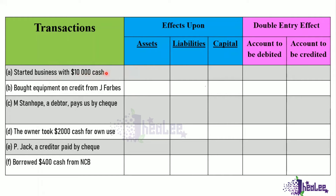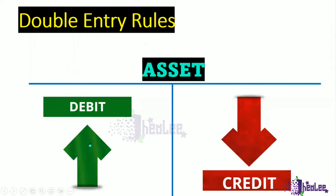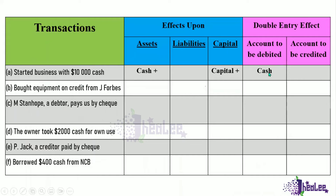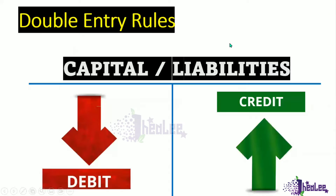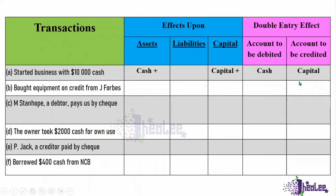Cash is an asset and there is an increase in the asset of cash, so we debit cash. Capital also increases, and the double entry rule for capital is that when there is an increase, you credit. So the account to be credited is capital. Once one item is debited, the other should be credited.